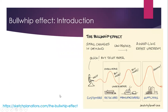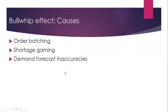I found a very nice sketch from the site sketchplanations.com. It is a very good illustration of the bullwhip effect — like a whip where demand is amplified from the customer to the suppliers. What are the causes of the bullwhip effect? It is order batching, because the upstream entities or facilities in the supply chain batch their orders, causing the demand to become oscillating or amplified.